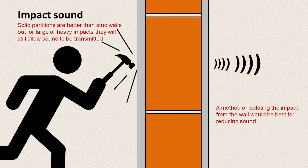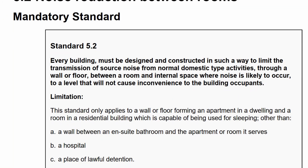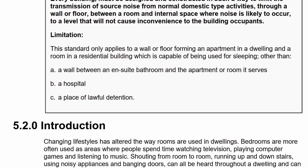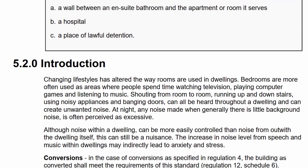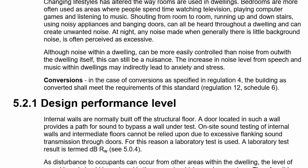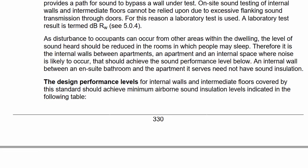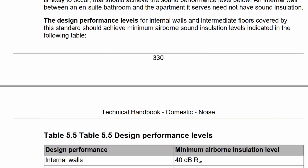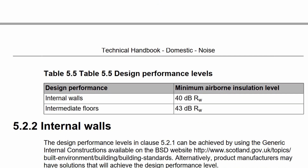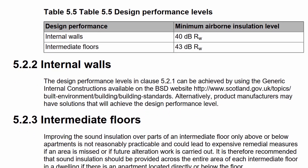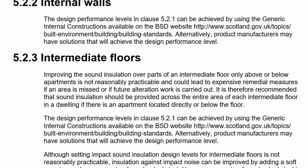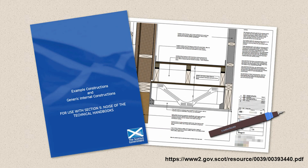A method of isolating the impact from the wall would be best for reducing sound. Looking at the building regulations under standard 5.2, they require that we deal with sound between different rooms within a building. They recognise a change in how we use buildings and look for various design performance levels — a reduction in sound from one room to the next. These are governed by standards in a table: between a room and a room with a separating partition, the required reduction is 40 dB, and between a floor it is 43 dB. The building regulations point towards a document produced by the Scottish Government called Example Constructions and Generic Internal Constructions, which provides examples for reducing sound transmission between rooms in the form of partitions and floors.